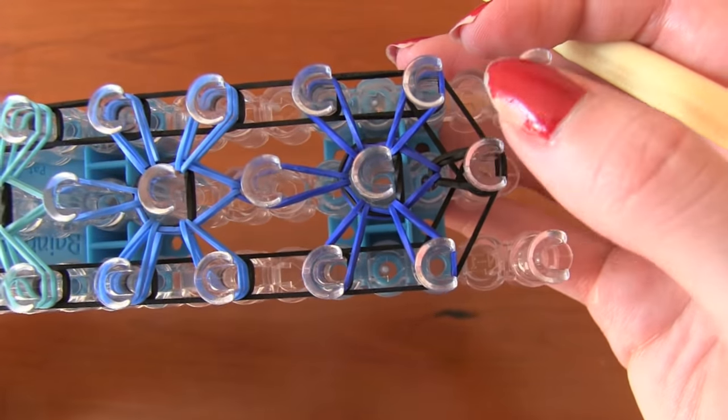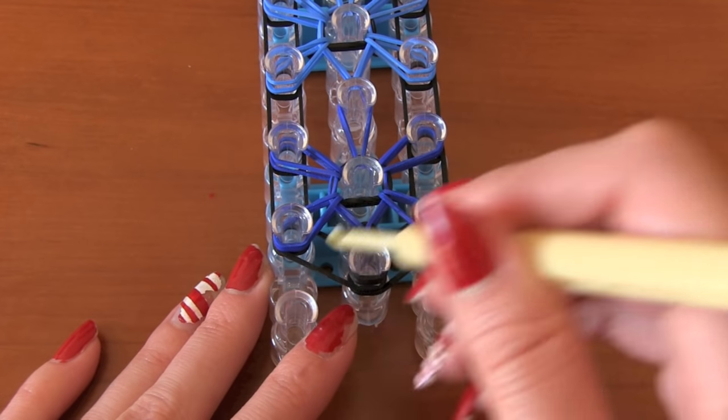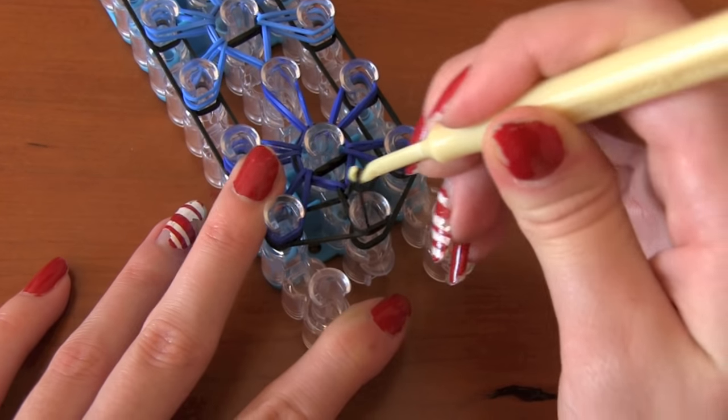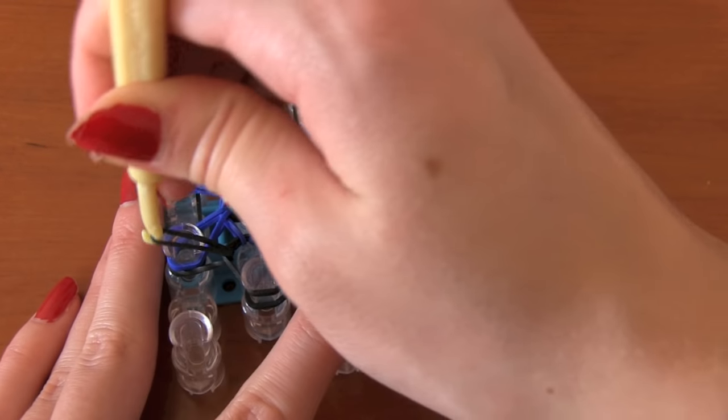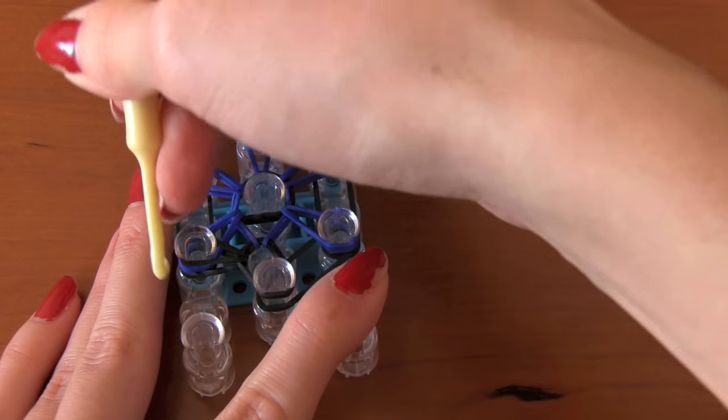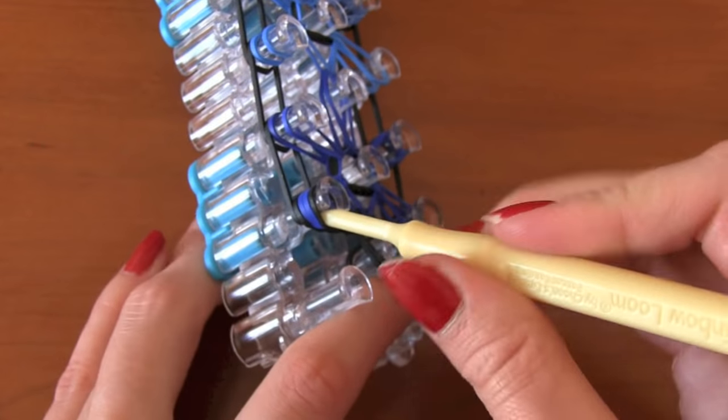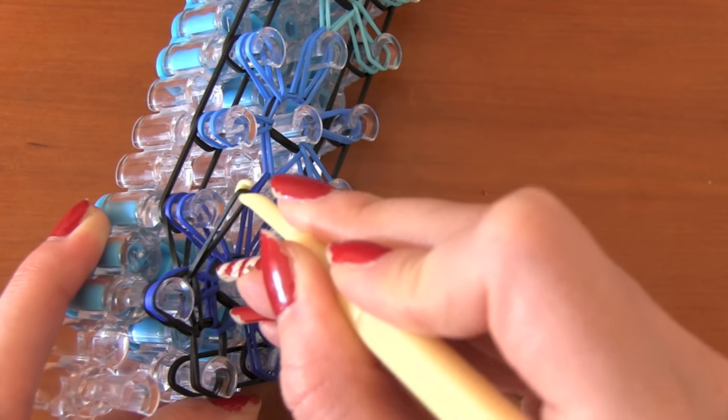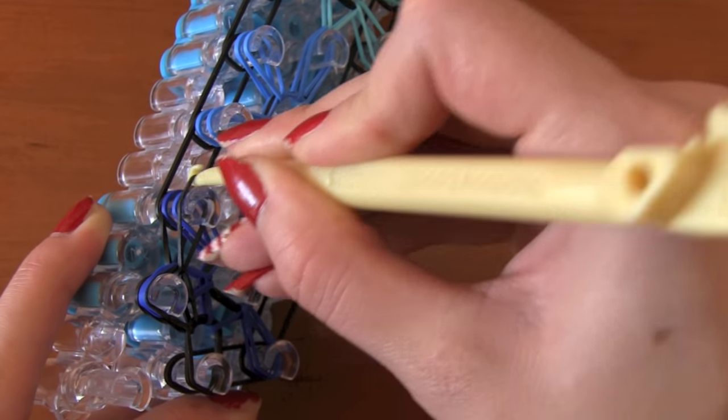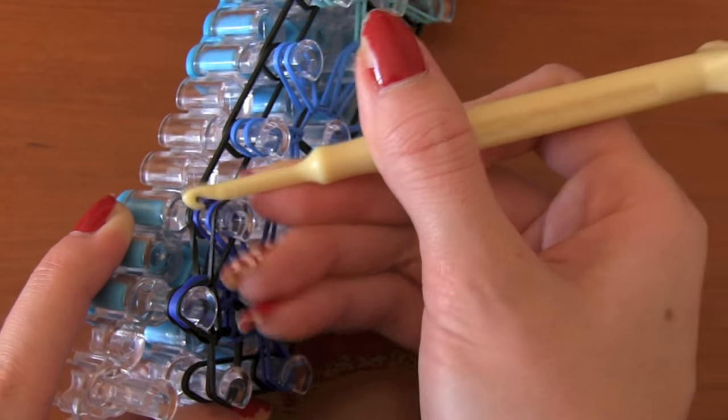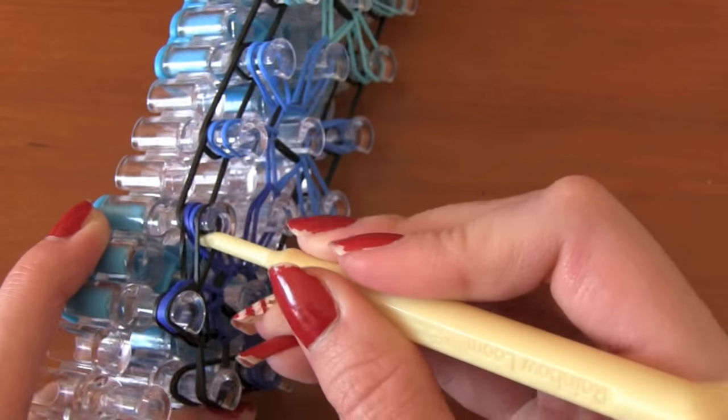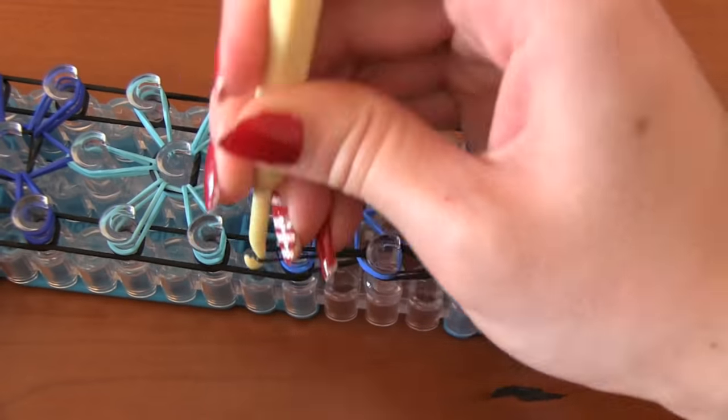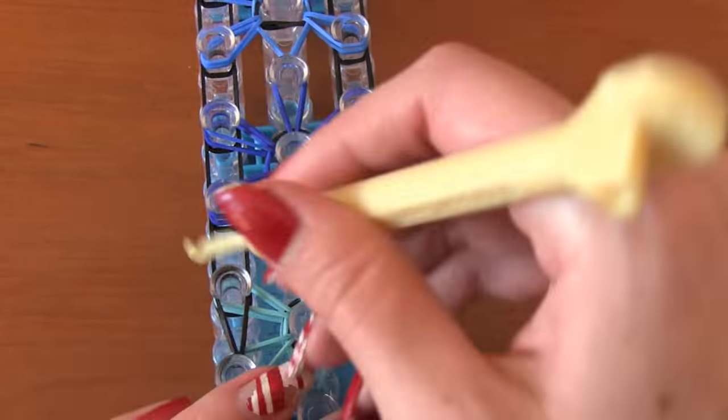All right. So for the border, you're going to put your hook in that middle peg and just grab the black band that is going toward the left. So you want to take it and move it to that left peg, the first left peg. Then at that peg, you're going to grab the black band and move it up to the second left peg and reach in and grab the black band to pull to the third left peg and keep repeating this up the entire side of the loom.